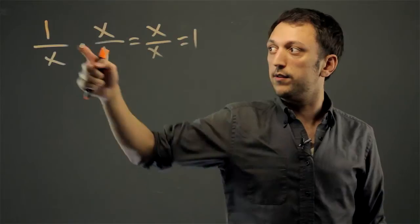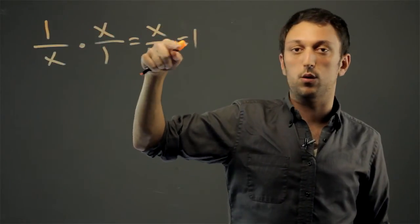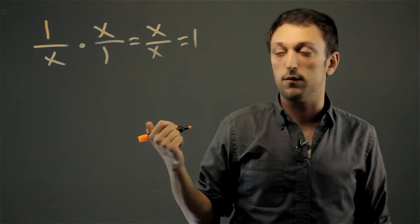The idea is any number times its reciprocal should equal 1, that's the multiplicative inverse.